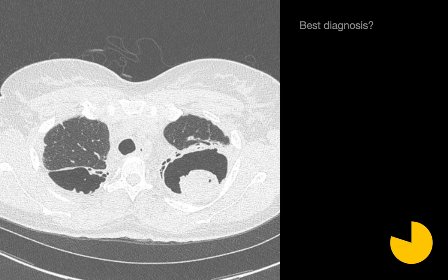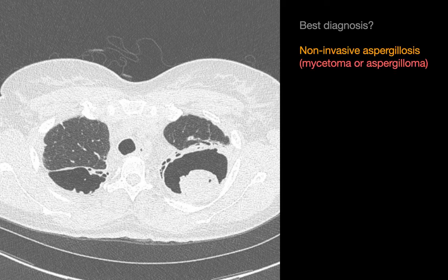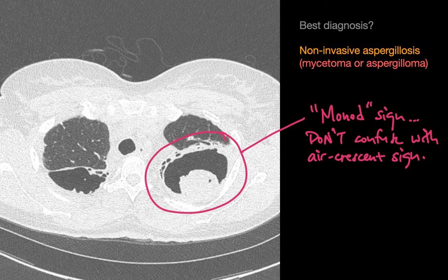What's your best diagnosis? The best diagnosis is non-invasive aspergillosis infection. The appearance of a mobile mass within a lung cavity is called the monode sign, which should not be confused with the air crescent sign.